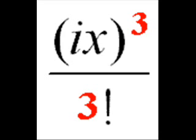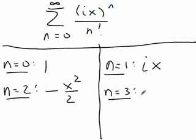Substitute n equals 3, I get i cubed, which is the opposite of i, times x cubed over 3 factorial, which I'll write as the opposite of i, x cubed over 6.